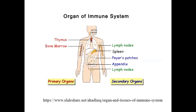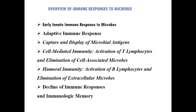The organs of the immune system include the thymus and bone marrow, called primary organs because lymphocytes are developed and matured there. When lymphocytes are mature, they move to the secondary lymphoid organs where antigens are entrapped and lymphocyte-antigen interactions occur.